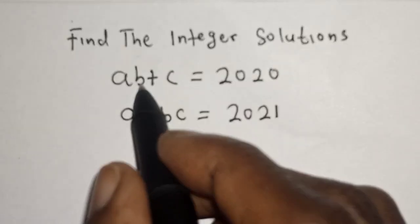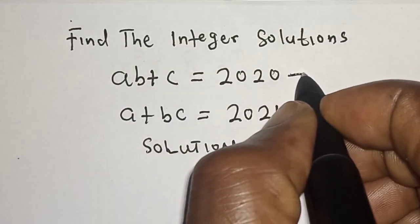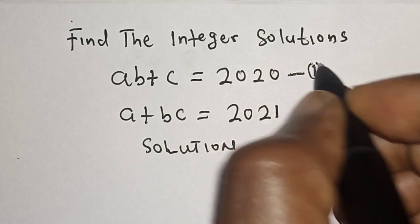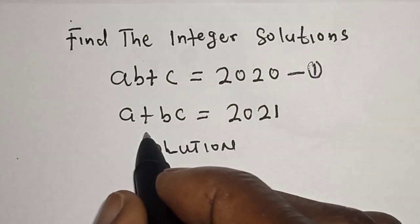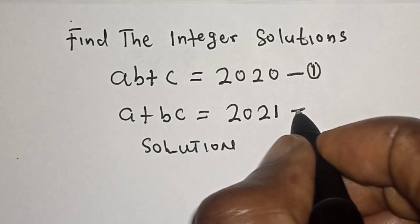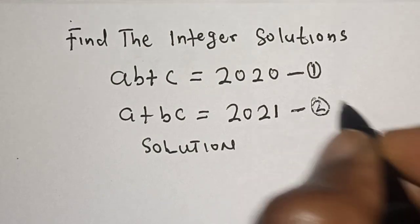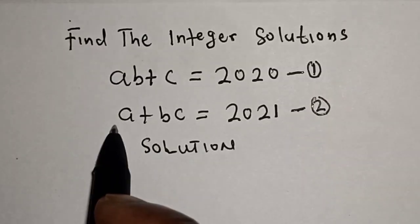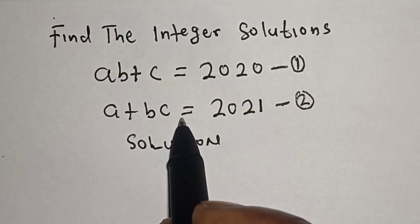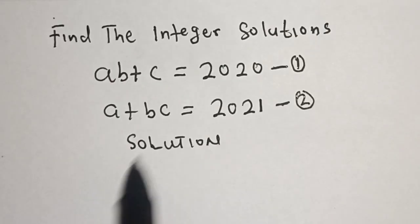A(B + C) = 2020 — let's call this equation one. Then A + BC = 2021 — let's call this equation two. Now from equation one and two, let's subtract equation two from equation one.